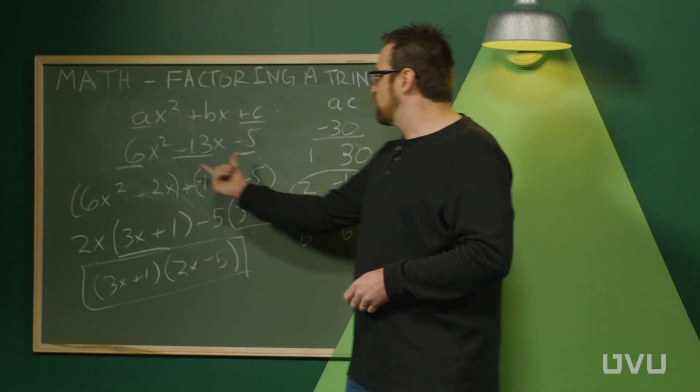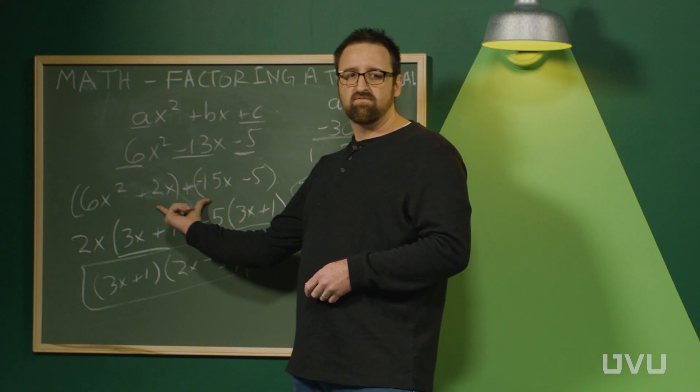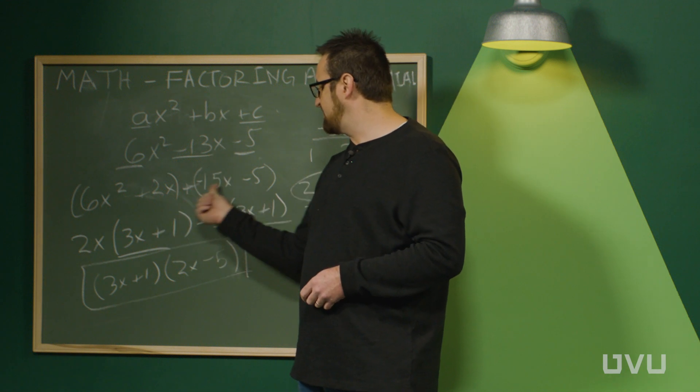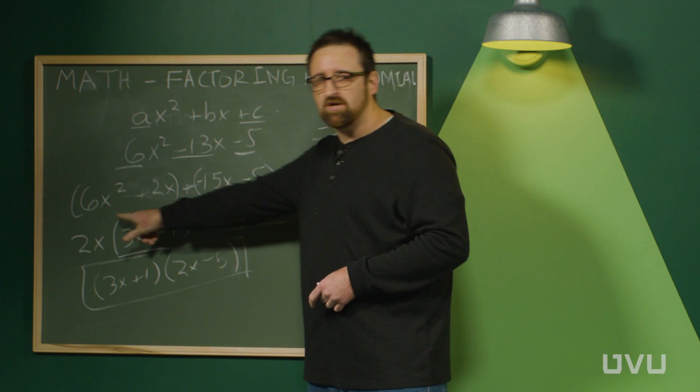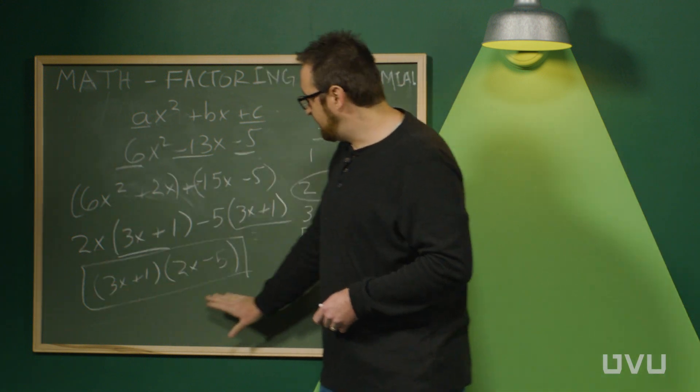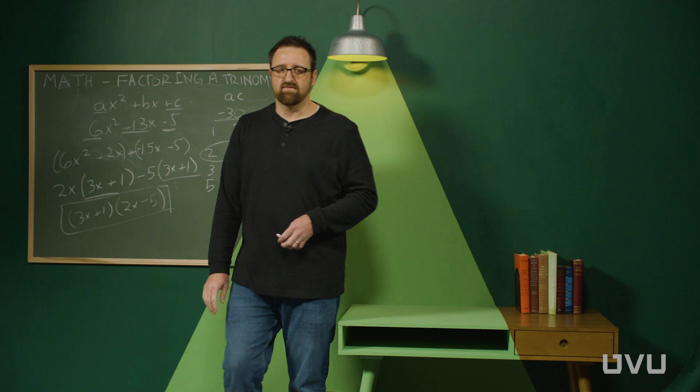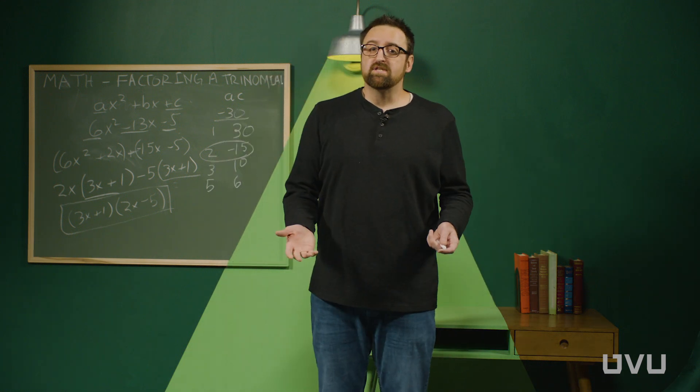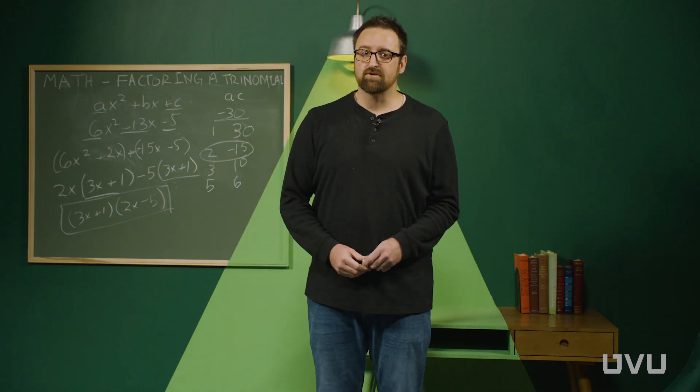Once you find the pair, you rewrite the middle term in terms of those two pairs, keeping the x's attached. And then you do what's called factoring by grouping, where we group them like this, and we pull out the greatest common factors until we get down to the factored form. I hope that was helpful for you in figuring out how to factor a trinomial.